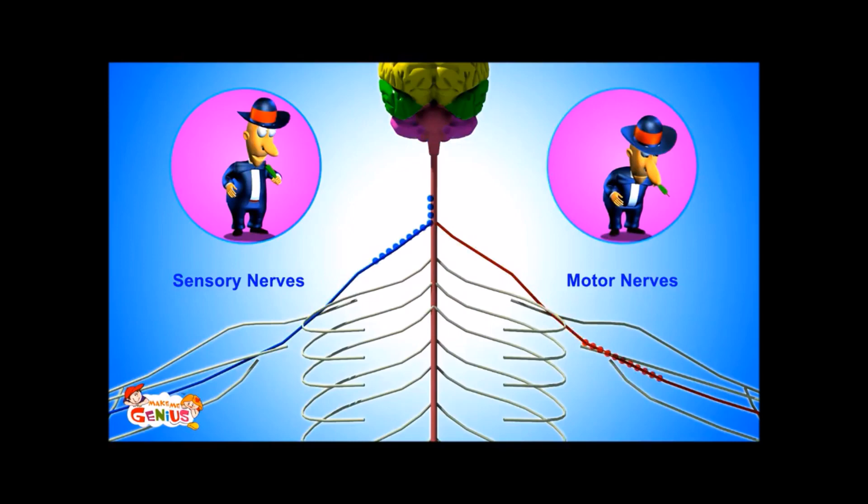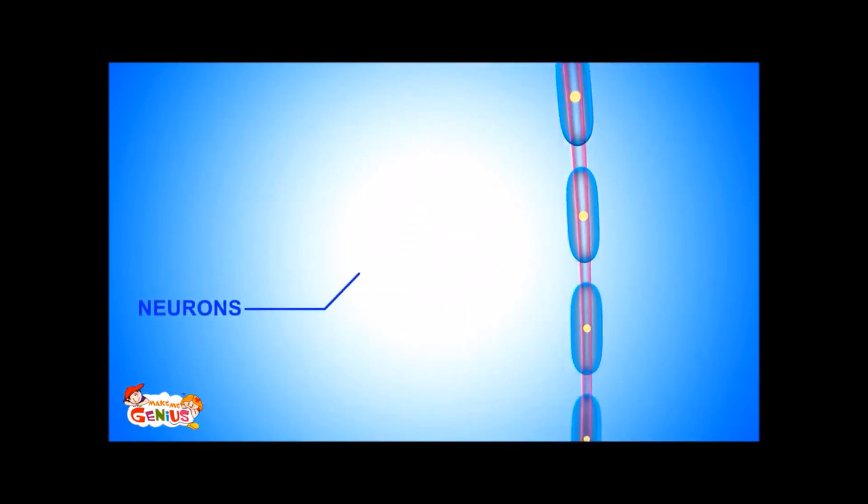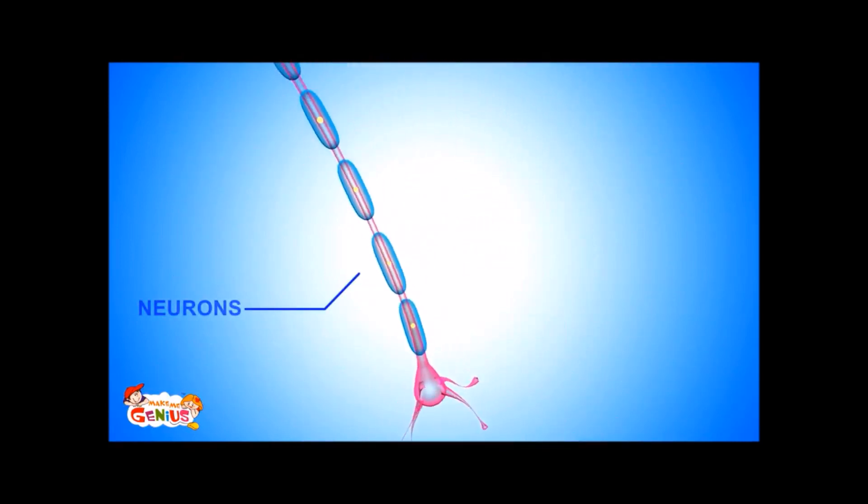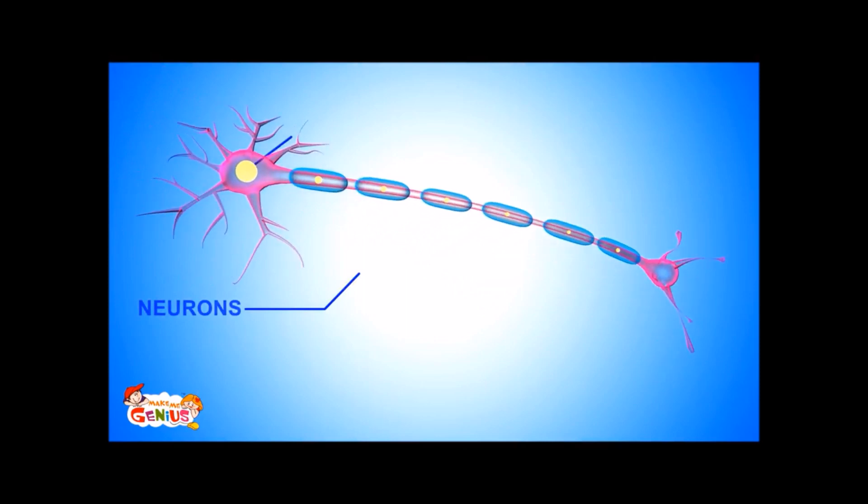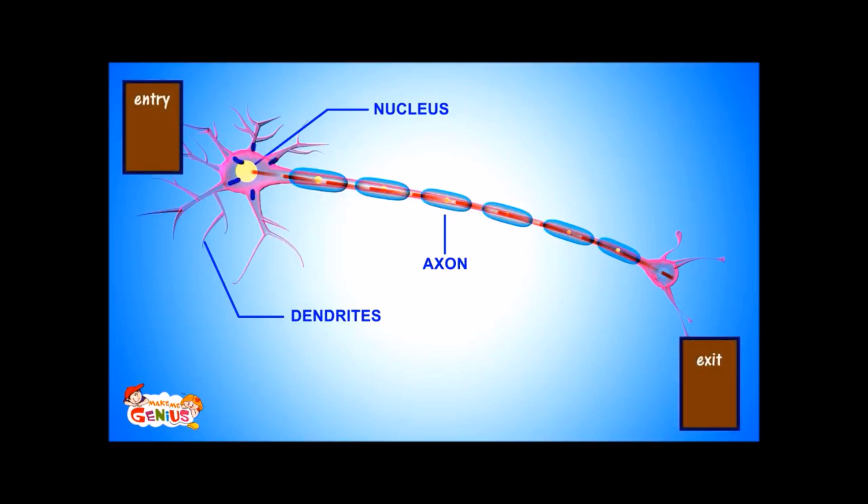All nerves are made up of neurons. A neuron has three major parts: a nucleus, which is the cell body, dendrites, and the axon. Dendrites take in the electric messages to cell bodies. Axons take the message away from the cell body. So dendrites are like entry to a parking lot, and axons are the exit route from parking.